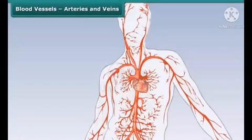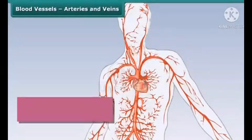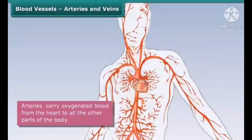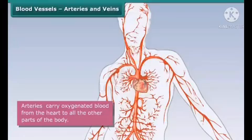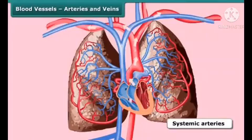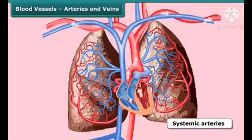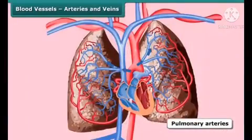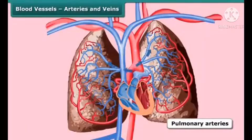Arteries are blood vessels with thick walls. They carry oxygenated blood from the heart to all the other parts of the body. Arteries are of two types: systemic arteries, which carry oxygenated blood from the heart to the other parts of the body, and pulmonary arteries, which carry deoxygenated blood from the heart to the lungs.